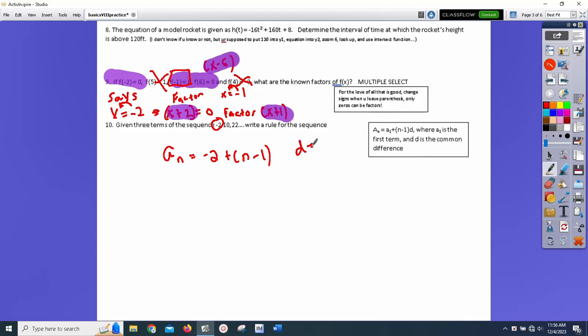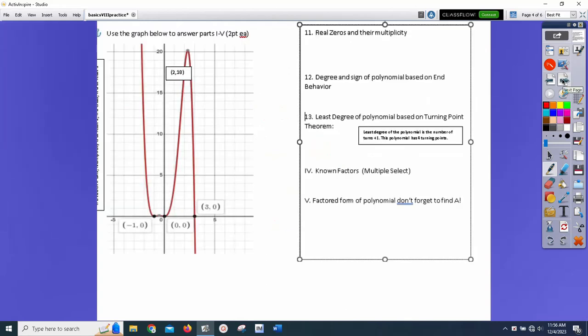It's negative two. The difference is going to be the second number minus the first. Ten minus negative two, which is 12. And then what I do is I distribute. We've been doing the distributive property forever. I'd have plus 12n minus 12, and then I put things together. There's 12n minus 14. It's not a hard problem. It's really, really not.